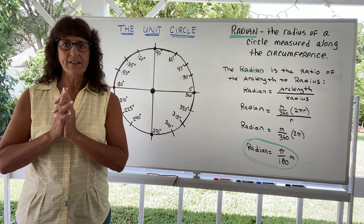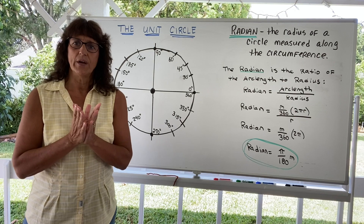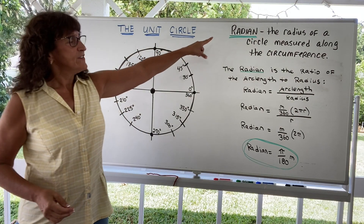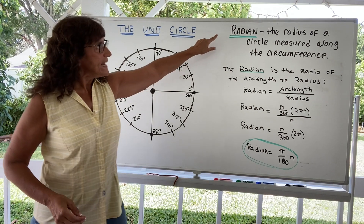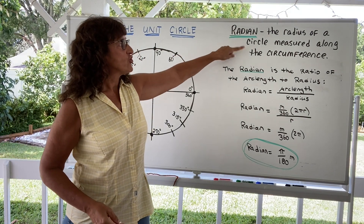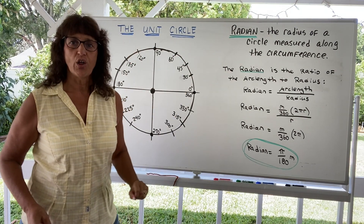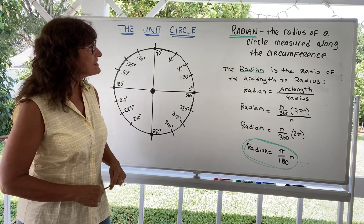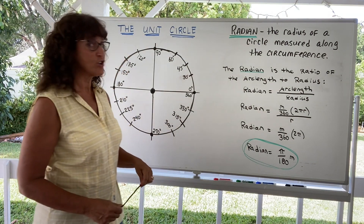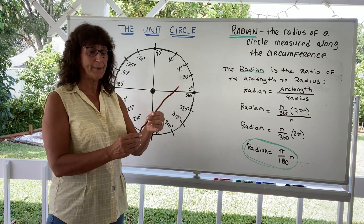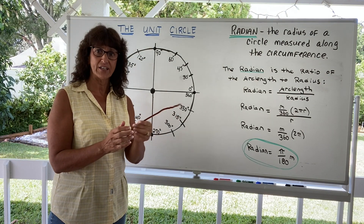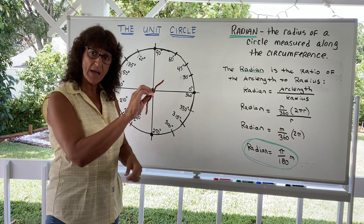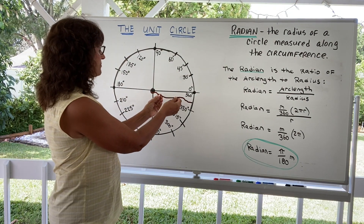So I thought we'd take a look at the radian — the definition of where it comes from and why they're labeled the way they are. The definition of a radian: a radian is the radius of the circle measured along the circumference. We're going to see that happen right now. I have a piece of pipe cleaner because it's flexible and I think I can show with this where it comes from.